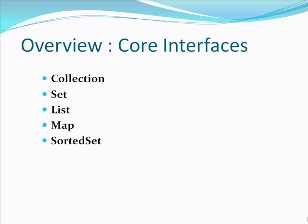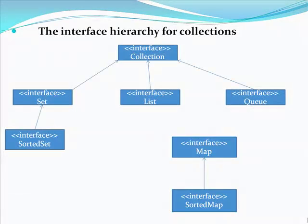These are the core interfaces of the collection framework: Collection, Set, List, Map, and Sorted Set. This is the hierarchy for the collections interface. Mainly there are three interfaces — Set, List, and Queue — that extend the Collection interface. Notice that the Map interface does not extend the Collection interface.